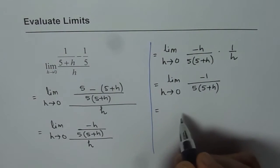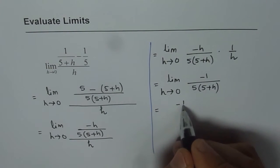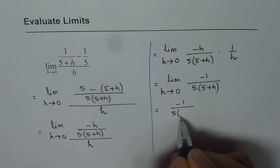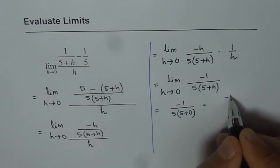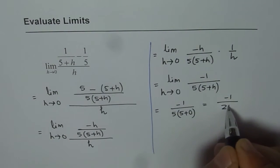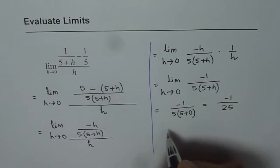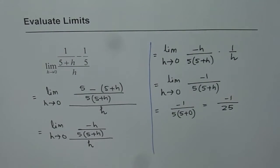Now substituting h equals 0 in this expression, we get -1 over 5 times (5+0), which is -1/25. So that is our answer. The limit of this function is -1/25.